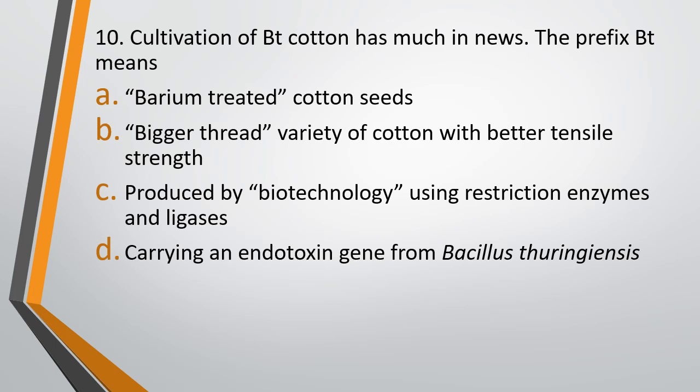Question 10. Cultivation of BT cotton is much in use nowadays. What does the prefix BT mean? Option A, Barium treated cotton seed. Option B, Bigger thread variety of cotton with better tensile strength. Option C, Produced by biotechnology using restriction enzymes and ligases. Option D, Carrying an endotoxin gene from Bacillus thuringiensis. The correct answer is option D, Bacillus thuringiensis. BT cotton has a gene derived from Bacillus thuringiensis and this gene codes for an endotoxin.